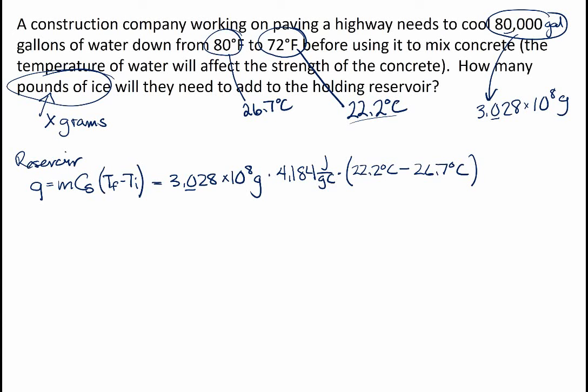So 22.2 minus 26.7 comes out to be -4.5, and that's useful to do first because you need to pay attention to significant figures. This is really going to end up being one sig fig - I started with degrees in Fahrenheit, I carried over an extra digit, but there's really one sig fig coming out of this and that's okay, it's a rough estimation. So you punch in all these numbers and I got -5.702 times 10 to the 9 joules. That's a lot of joules and we're looking at one sig fig at this stage.